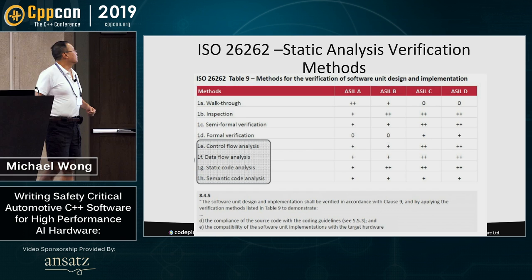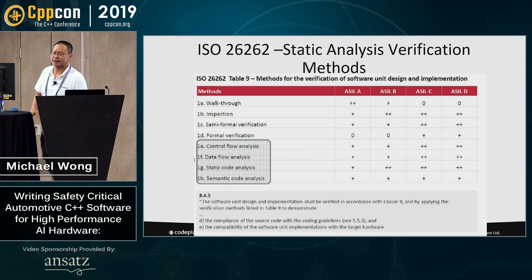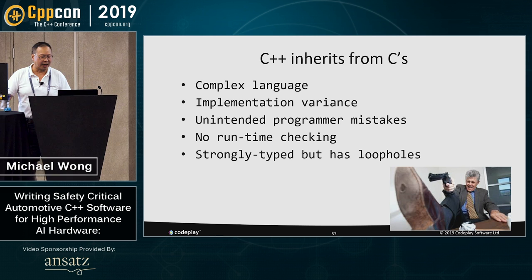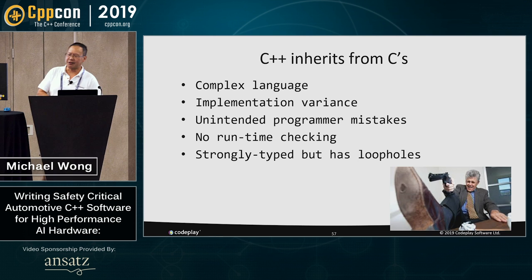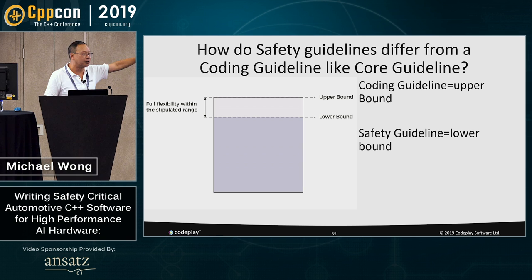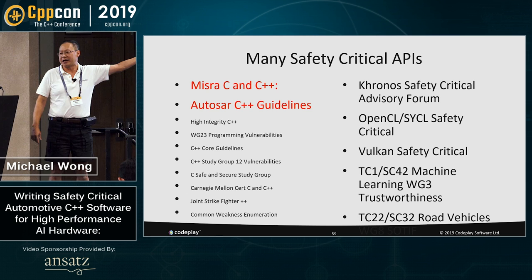ISO 26262 talks a lot about coding guidelines — there's a section on control flow analysis, data flow analysis, static code analysis, and semantic code analysis at different levels of increasing safety. C++ has a lot of things inherited from C: a somewhat complex language with implementation variance, unintended programming mistakes, no runtime checking, strongly typed but with some loopholes. There are many coding safety standards, and over time I've narrowed them down to one or two that are really relevant — highlighted in red.